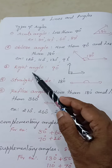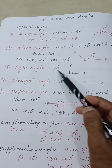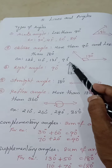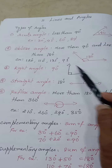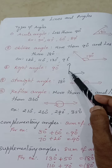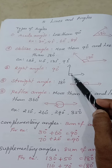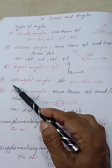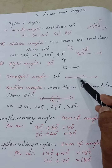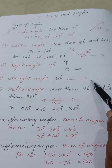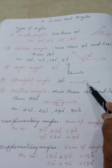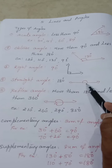The third angle is the right angle — the angle which is exactly 90 degrees. It is the L-shape angle, and its measure is exactly 90 degrees. The fourth angle is the straight angle — when you draw a straight line, the angle formed is 180 degrees.